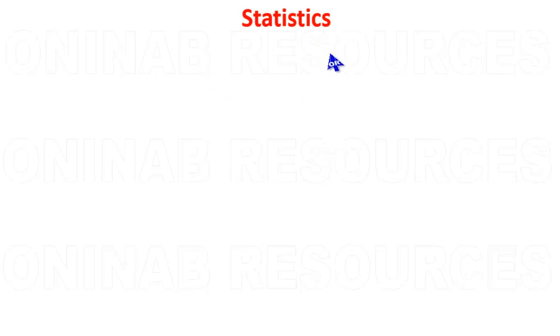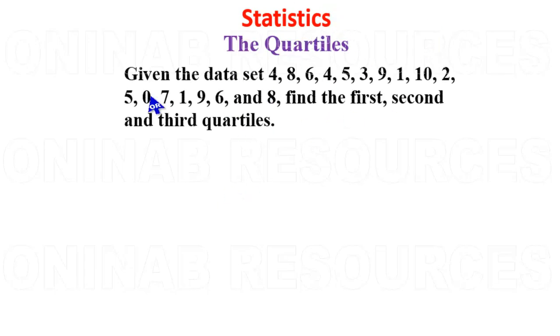Hello, welcome to this tutorial on statistics. We'll be looking at the quartiles of ungrouped data. So we have other videos on these quartiles of ungrouped data. So we have this problem here. Given the data set 4, 8, 6, 4, 5, 3, 9, 1, 10, 2, 5, 0, 7, 1, 9, 6, and 8, find the first, second and third quartiles.